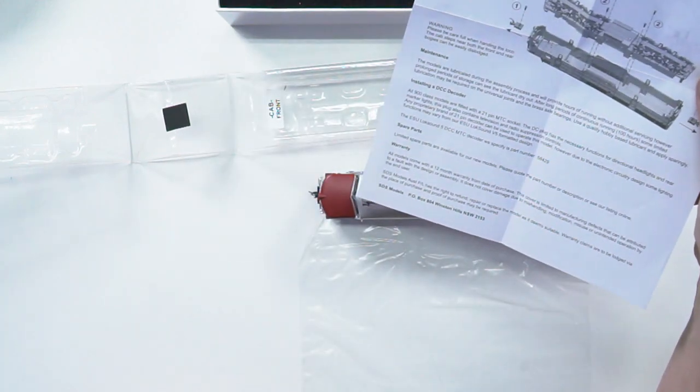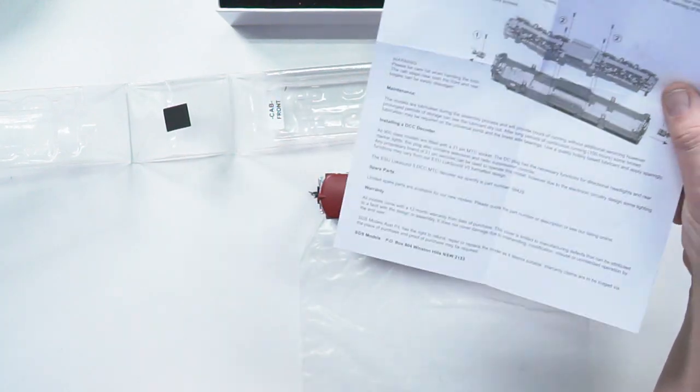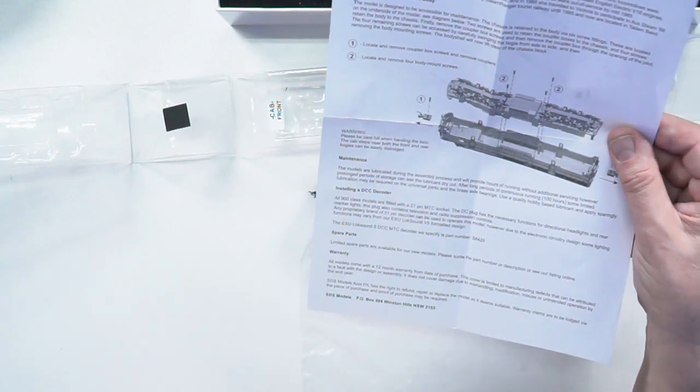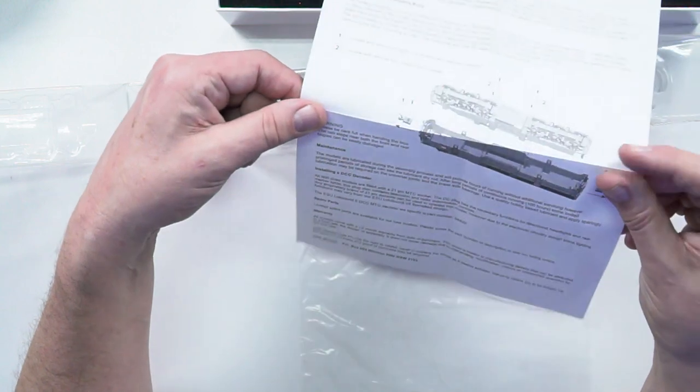And it will take a 21 pin decoder if you just want to run as purely as a DCC model, or you can put an ESU LokSound decoder when they become available.